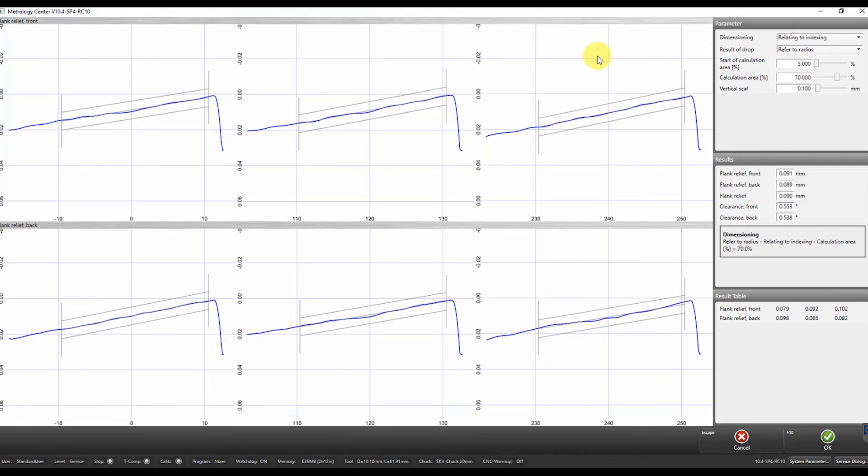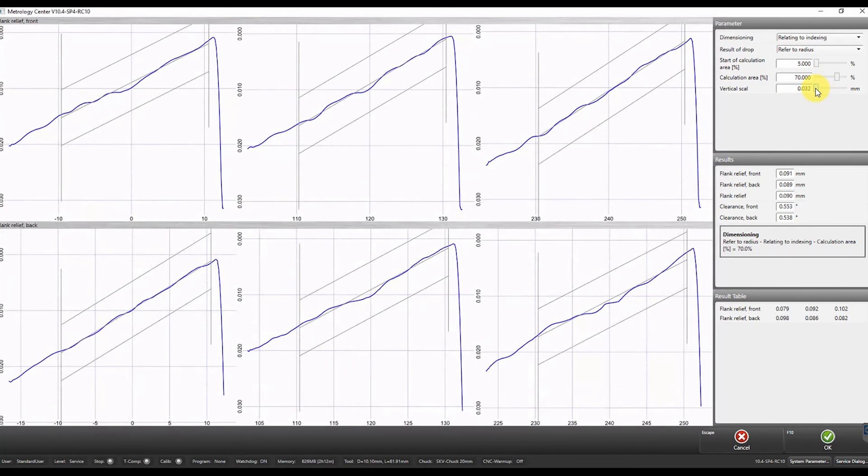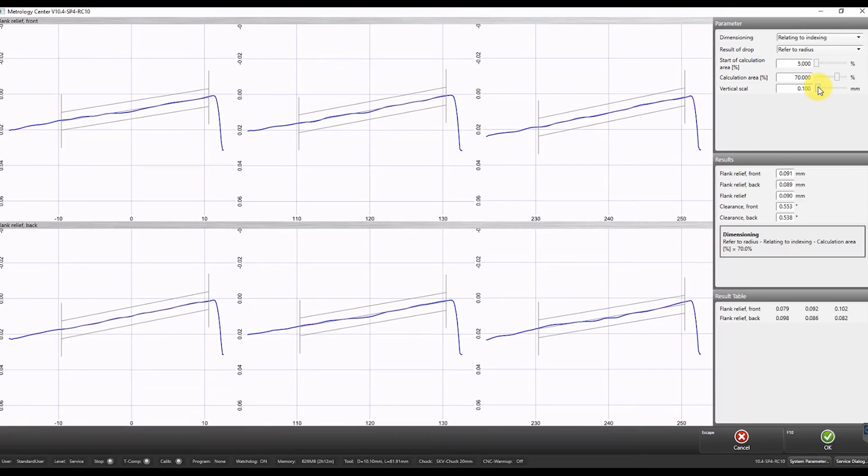The analog measuring probe can even be used to measure and record flank relief on taps for screw taps in accordance with industry norms. To make this possible and to be able to measure this parameter even with smaller screw diameters, a measuring tip is used here instead of the measuring ball.